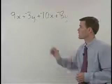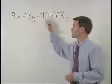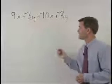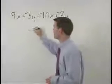So let's start by combining our x terms. 9x plus negative 10x simplifies to negative 1x.